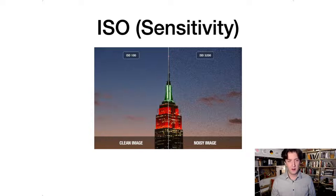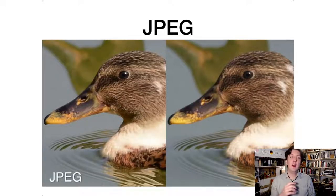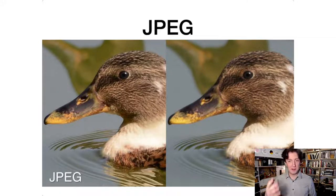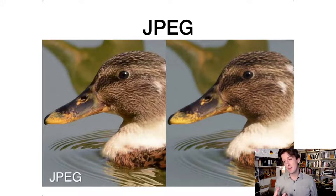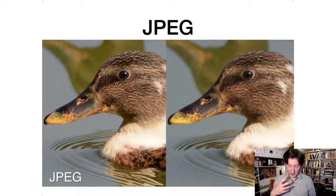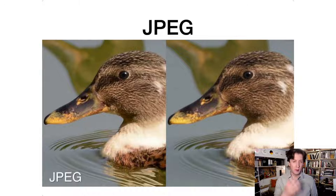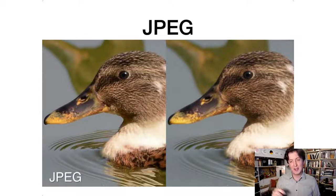JPEG is the most common compression file type for shooting — you can send a JPEG to your mom or grandma and they can open it over email. RAW files are great because they have a lot of data, but they're quite big and need to be processed. When you're starting out, if you're not shooting anything critical and don't want to invest in software, just shoot JPEGs — they take up less room on the card, you can shoot more photographs, and it's just practice anyway.